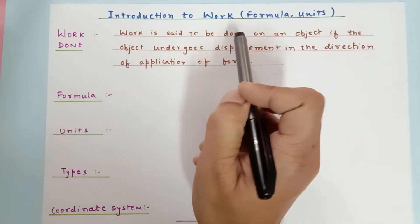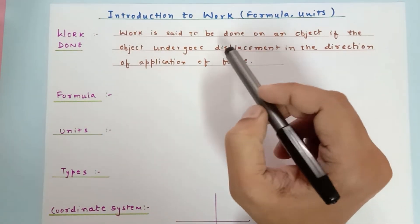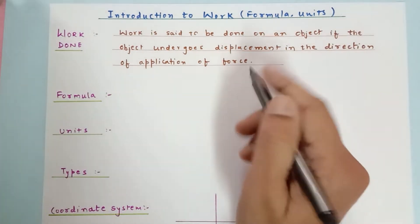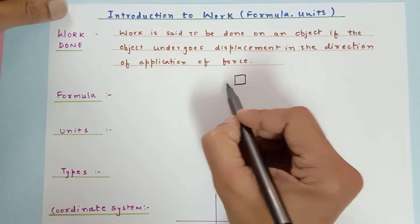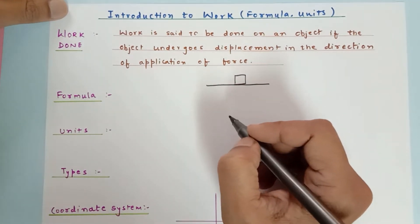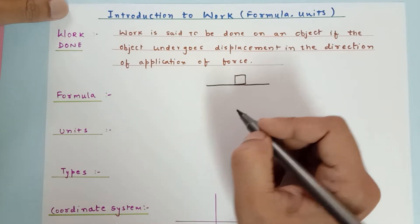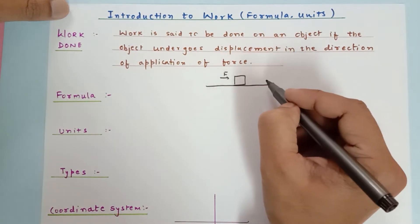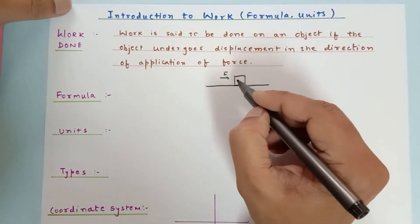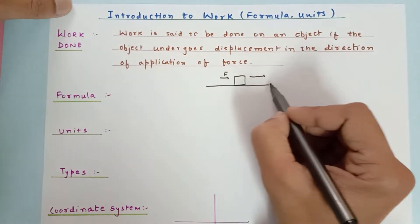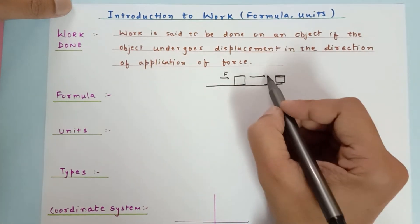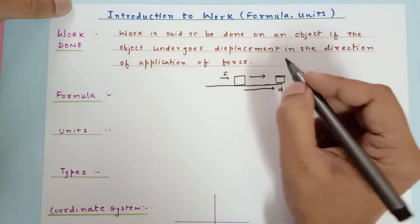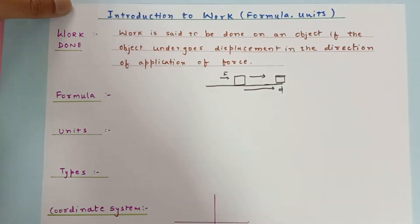Work is said to be done on an object if an object undergoes displacement in the direction of force. Suppose there is a block on a surface and you are exerting a force. If there is no displacement then there is no work done, but if this body displaces in the same direction and the block reaches over here, there has to be some work done.